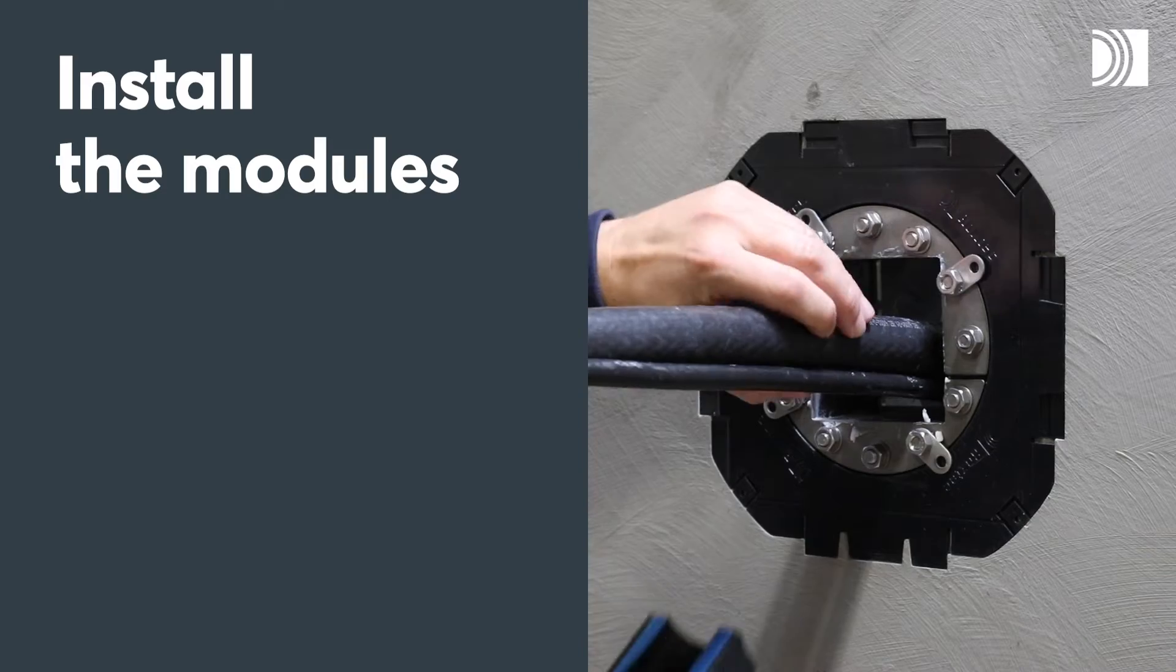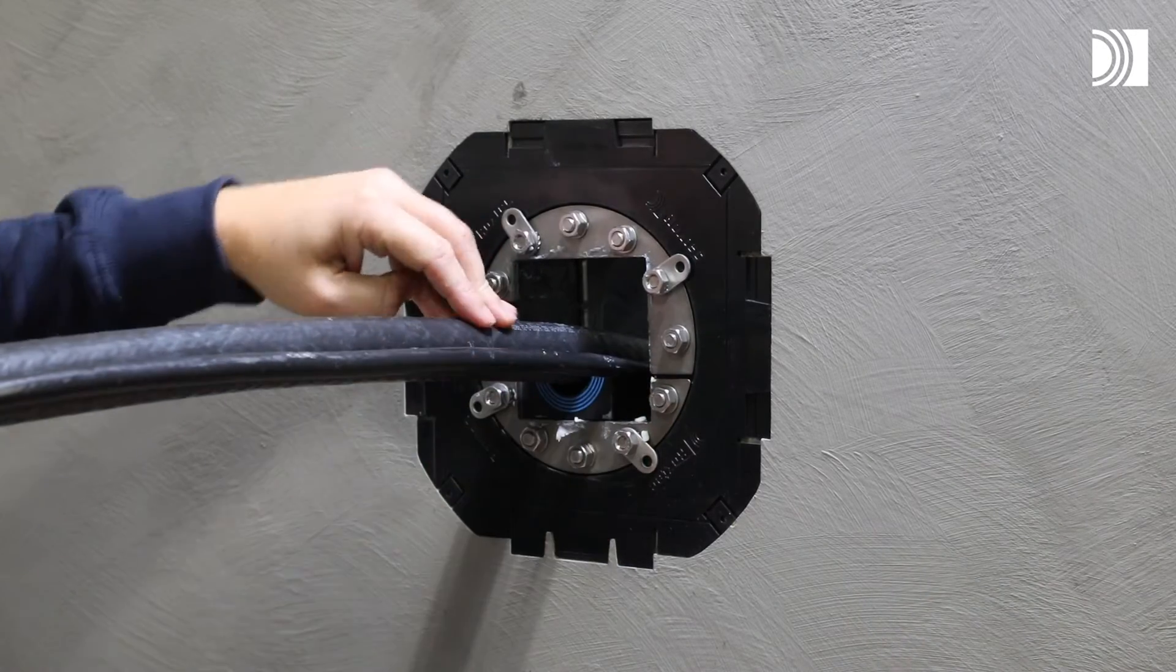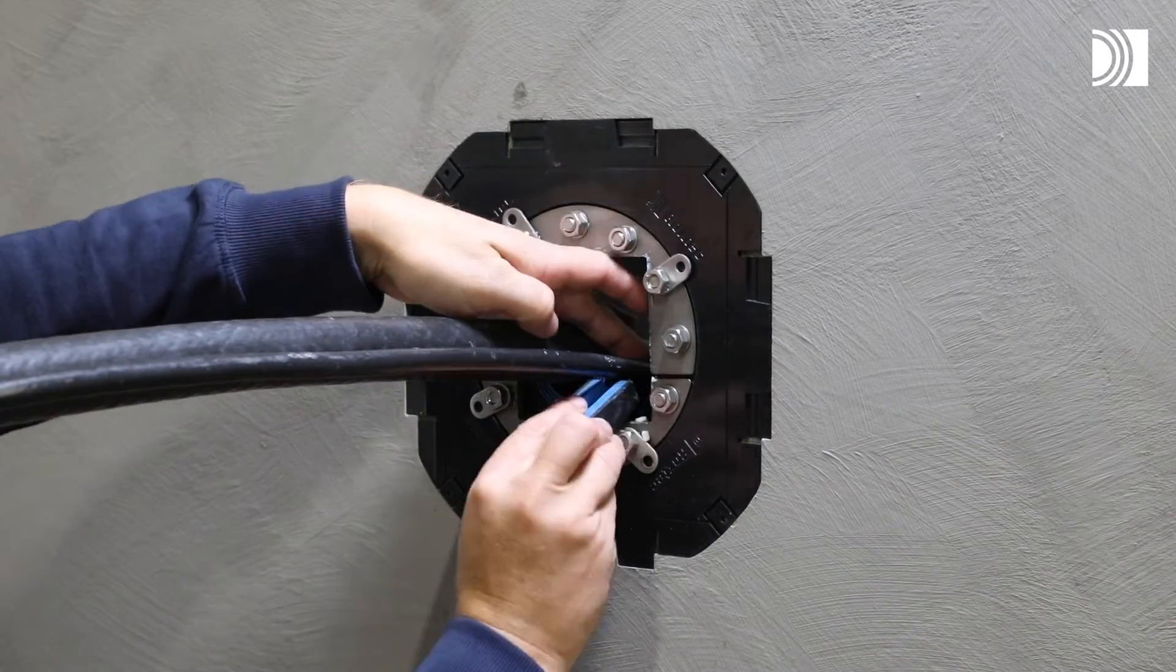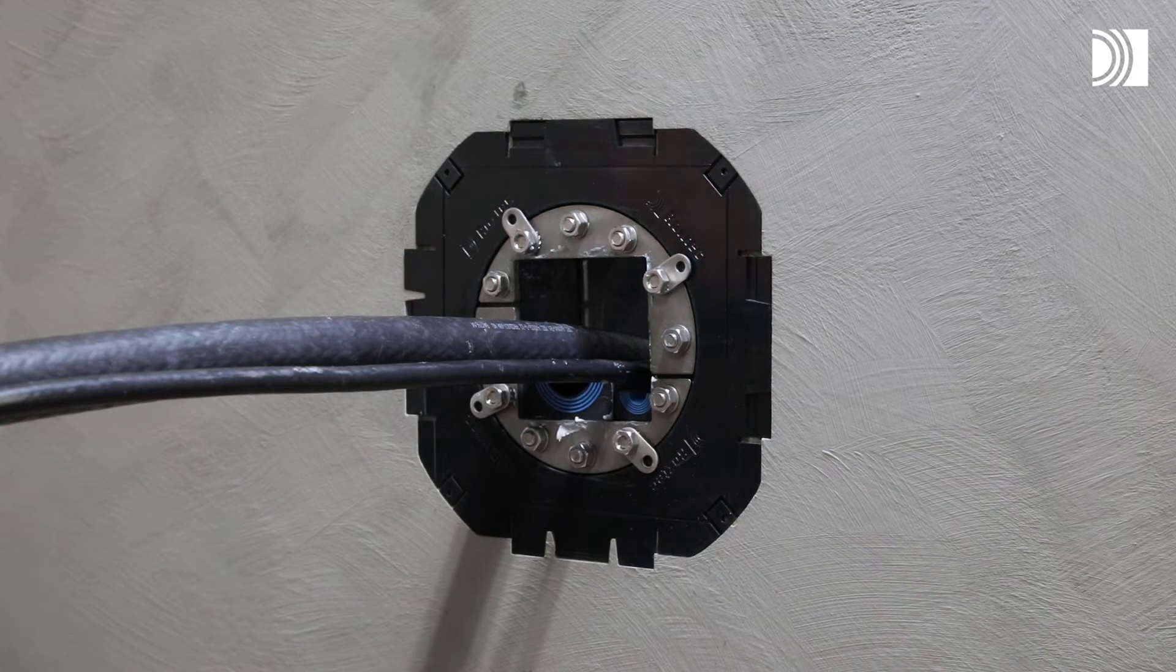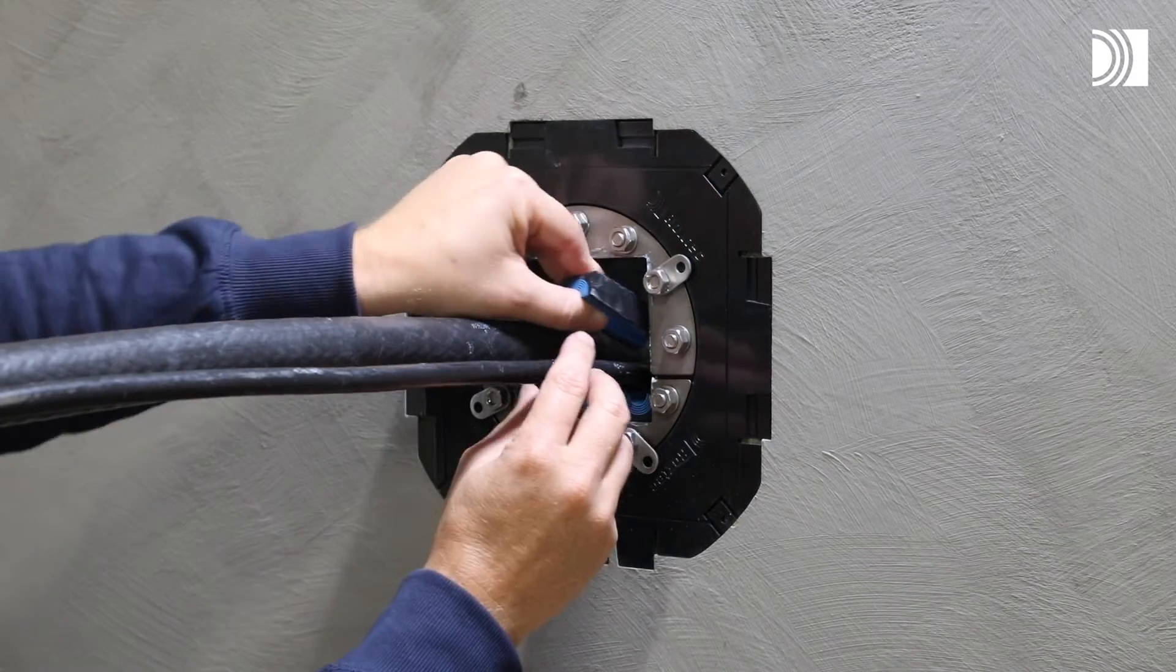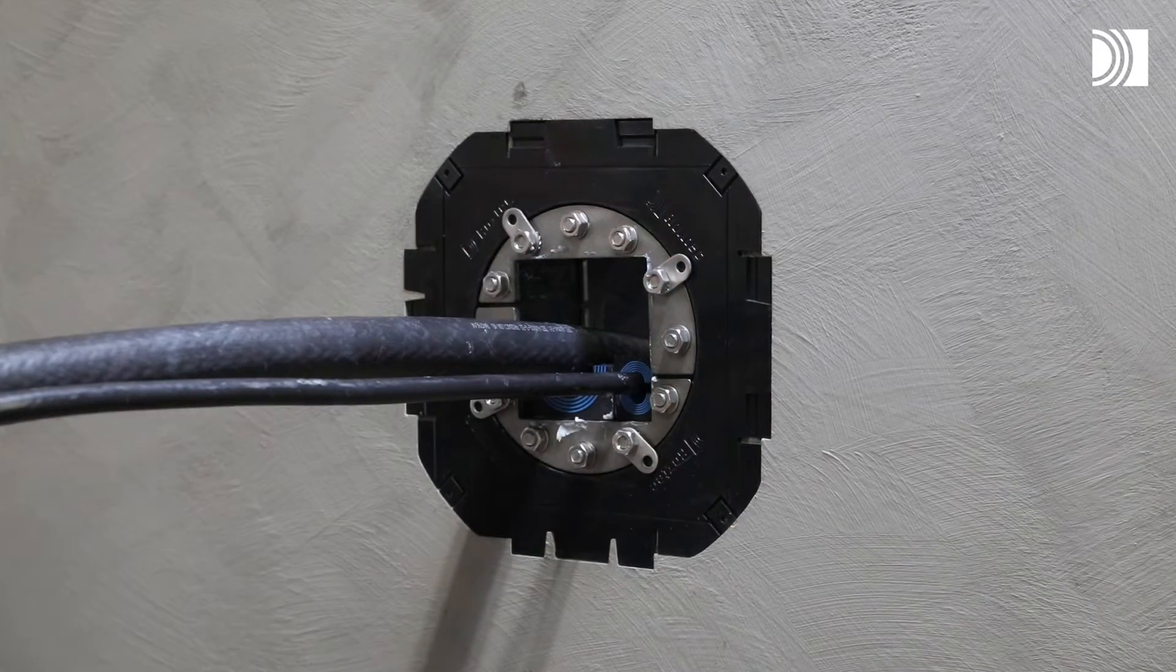Install the modules. Insert the modules according to your packing plan. A Roxtec pre-compression tool can be used to make room for the final module row.